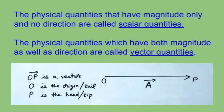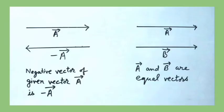The negative vector of a given vector is a vector having the same magnitude but direction opposite to that of the given vector. If the given vector is A, then its negative vector is represented as minus A. Both have equal magnitude and opposite directions.